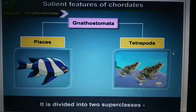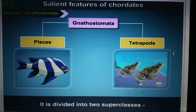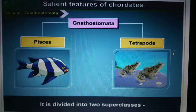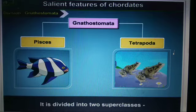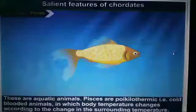Today we are starting the new topic: Gnathostomata. The division Gnathostomata is divided into two sub-phyla. The first one is Pisces — meaning those bearing fins — and the second is Tetrapoda, which includes limbs. So Pisces have fins and Tetrapoda have limbs. That is why the superclass Pisces is characterized by fins.